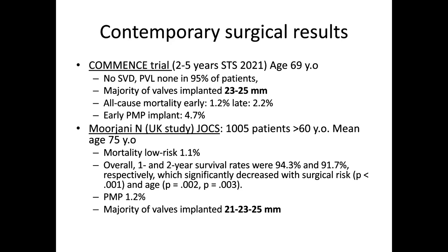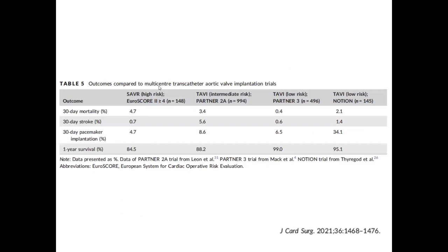Another paper by Morjani, published in the Journal of Cardiac Surgery, included 1,000 patients with a mean age of 75. Mortality was very low at 1.1%, and survival at one and two years was 94% and 92% respectively. The pacemaker rate was 1.2% and the majority of valve implants were 21, 23, and 25mm. Comparing SAVR to TAVR across risk groups — the 30-day mortality was 4.7% in the high-risk surgical cohort, lower in intermediate risk, and even lower in low-risk TAVR. The stroke rate was low, and one-year survival was 84% in the high-risk population.